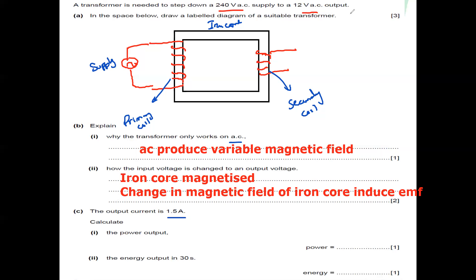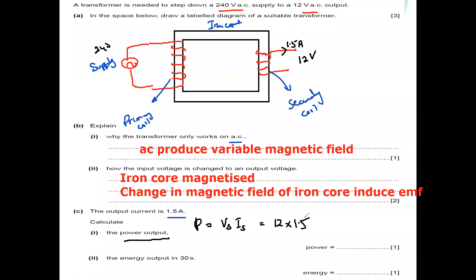The output current is 1.5 amperes and the output voltage is 12 volts. Output power is P = VI: 12 multiplied by 1.5 equals 18 watts. The energy output in 30 seconds is energy equals power multiplied by time: 18 multiplied by 30 equals 540 joules.